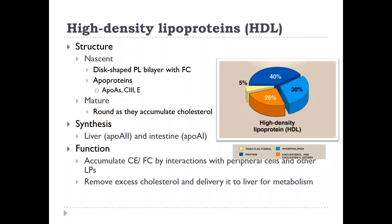HDL are synthesized in the circulation; however, the original apoproteins necessary for their formation are synthesized either in the liver or in the intestine. Just remember that the ApoA class is synthesized in the liver and in the intestine. Their function is to accumulate free cholesterol and cholesterol esters by interacting with peripheral tissues and other lipoproteins, removing excess cholesterol that is not used by the cell, and bringing it back to the liver, which can recirculate it and use it for bile salt production.